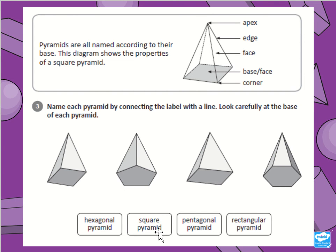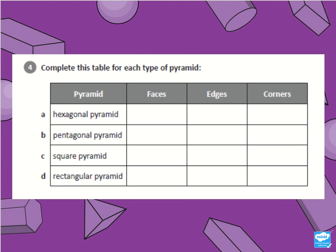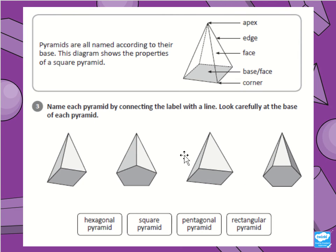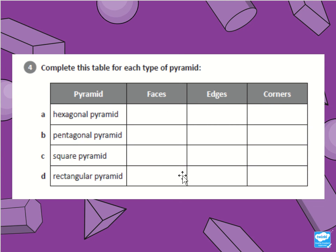Which one is a square pyramid? Which one is a pentagonal pyramid? Which one is a rectangular pyramid? For question four, complete the table for each type of pyramid — figure out how many faces, edges, and vertices each one has. Do this for the hexagonal pyramid, pentagonal pyramid, square pyramid, and rectangular pyramid.